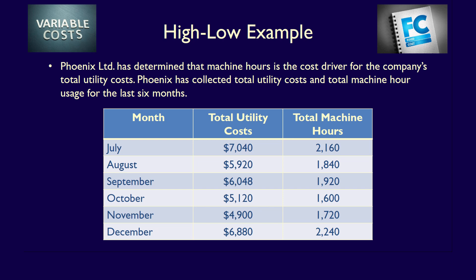The data is as follows: July $7,040 / 2,160 machine hours; August $5,920 / 1,840 machine hours; September $6,048 / 1,920 machine hours; October $5,120 / 1,600 machine hours; November $4,900 / 1,720 machine hours; December $6,880 / 2,240 machine hours.